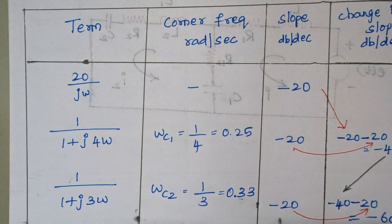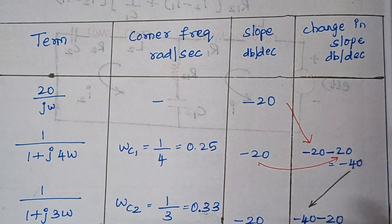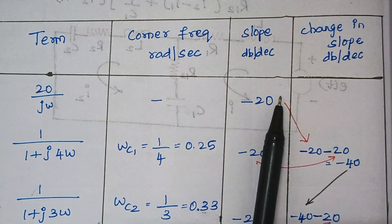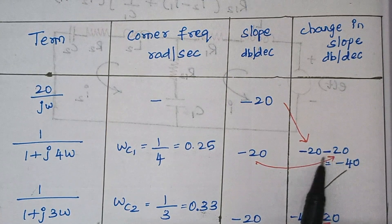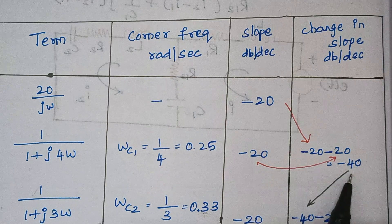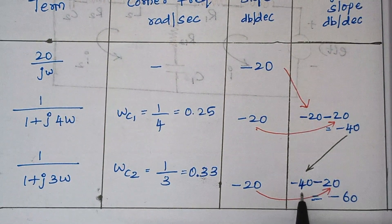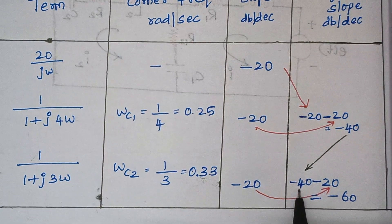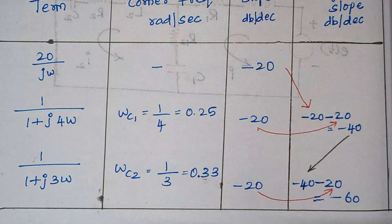Next we find the change in slope. The −20 from the first term is carried forward, and we add −20 at ωc1, giving −40. Then at ωc2 we again shift down and add −20, giving −60. Thus our table is complete.